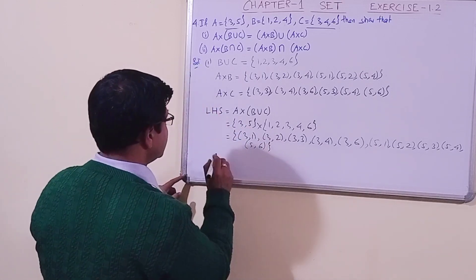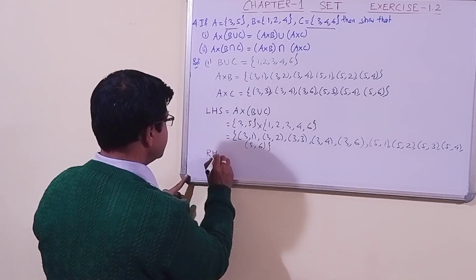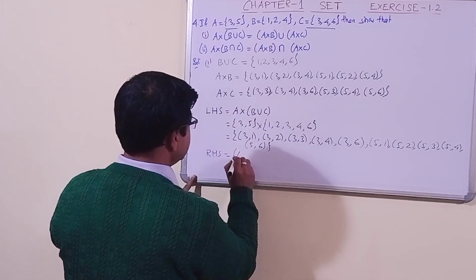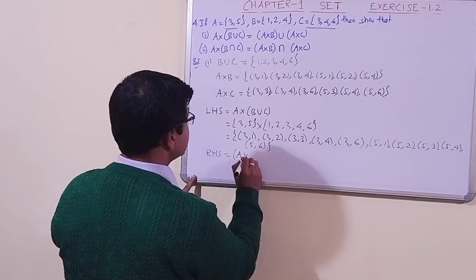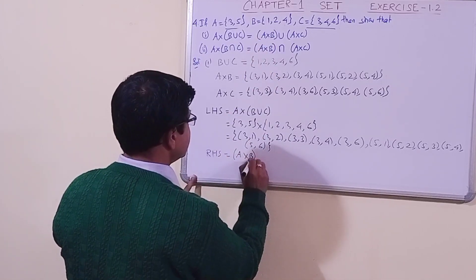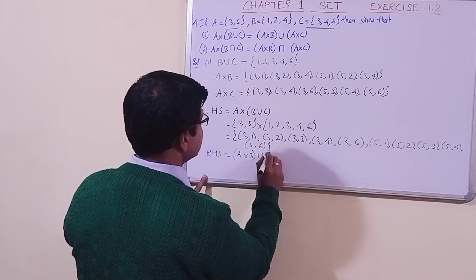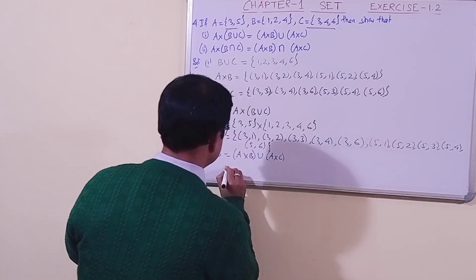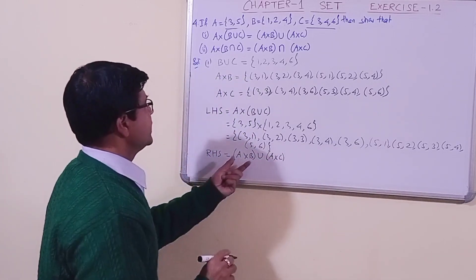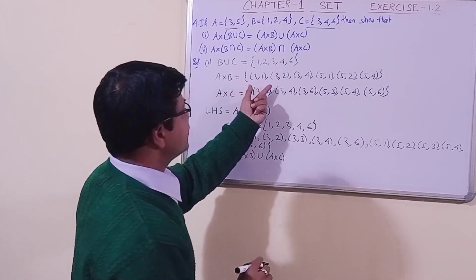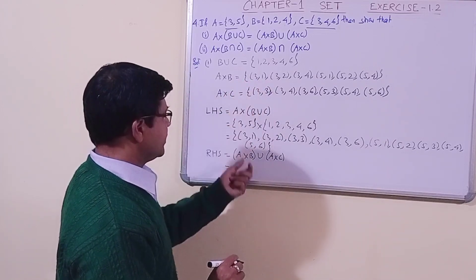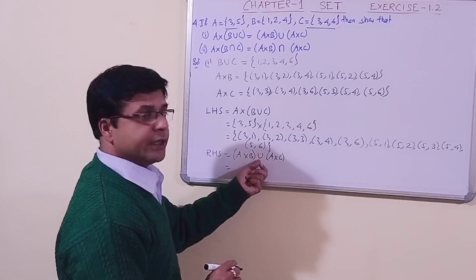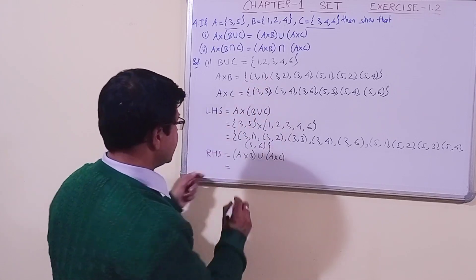Now let us solve the right-hand side, which is (A cross B) union (A cross C). We have already found A cross B and A cross C. Now let us find their union.